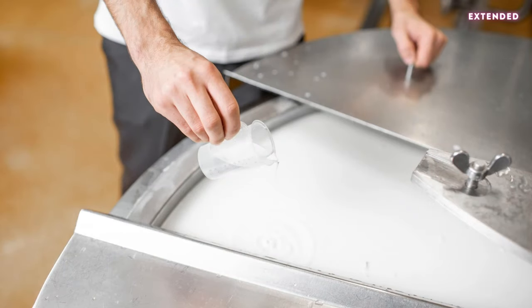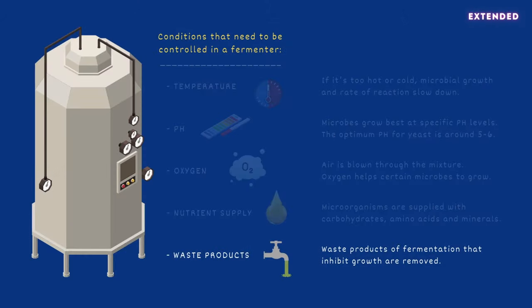For example, yogurt is made by fermenting milk, which contains the sugar lactose, and wine by fermenting grape juice, containing glucose and fructose. Finally, waste products of fermentation may slow down or harm the microorganisms if allowed to accumulate, and are therefore continually removed.